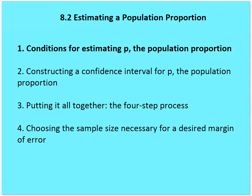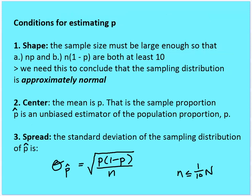So now going back to the objectives for this section. We're going to talk about: conditions for estimating P, the population proportion; constructing a confidence interval for the population proportion using a four-step process; choosing the sample size necessary for a desired margin of error. For conditions, regarding shape, center, and spread — we want to know that the sampling distribution is approximately normal. The sample size must be large enough so that np and n times (1 minus P) are both at least 10.